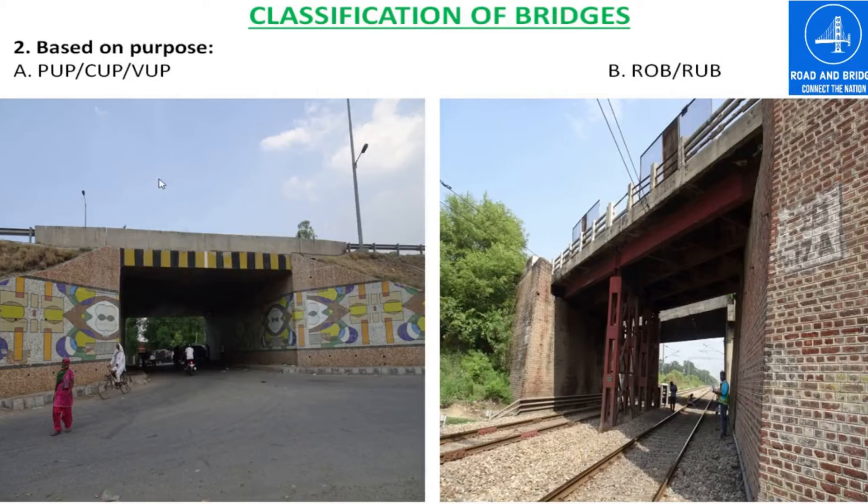Here, this is a VUP — Vehicle Underpass Bridge. Vehicles are allowed to move under the bridge. In case of COP, cattle are allowed to move under the bridge. In case of POP, pedestrians are allowed to move under the bridge.